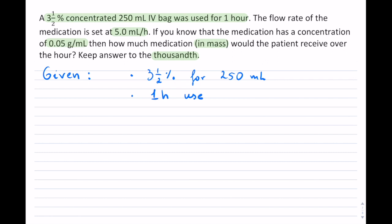The flow rate of the medication is set to 5 mL per hour. Since we've used it for 1 hour, this actually tells us how much of the medication they received. Now, the concentration here is 0.05 grams per mL.